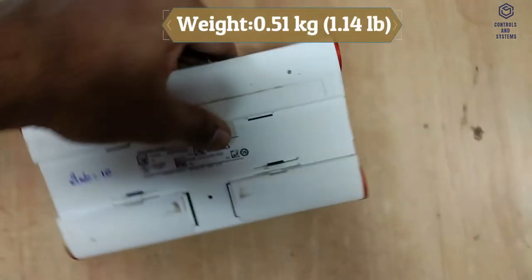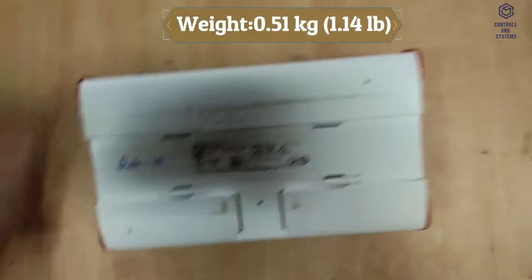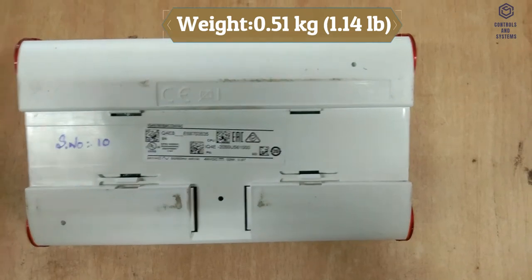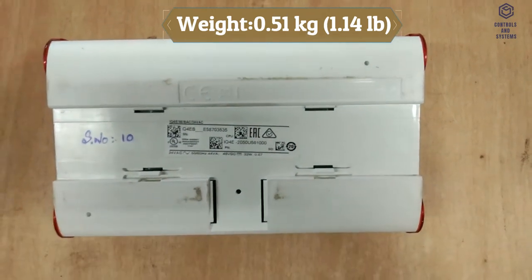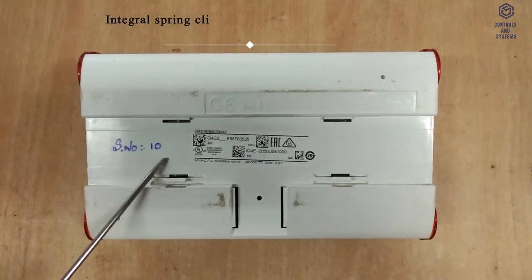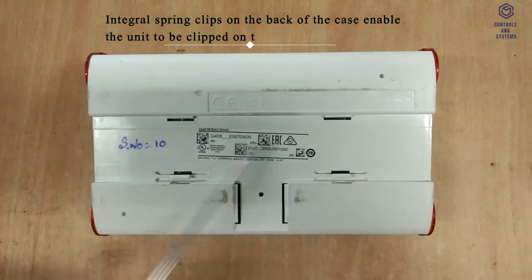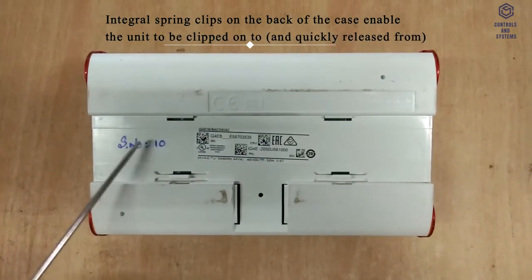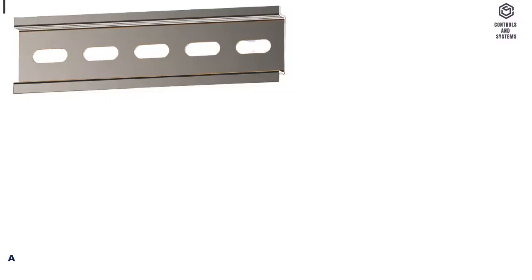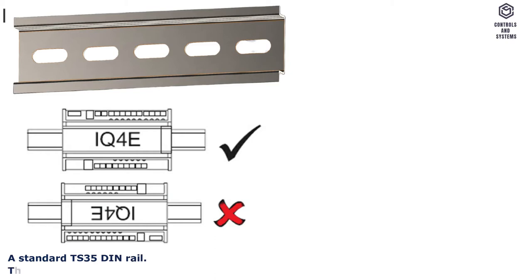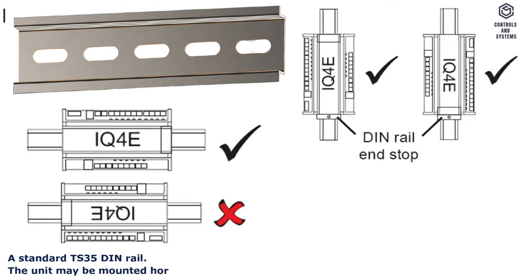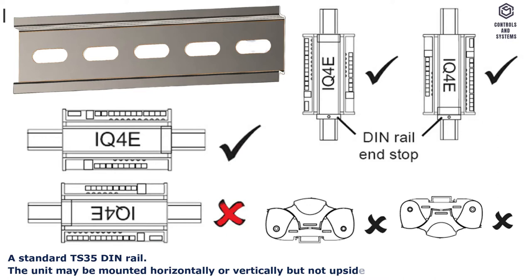Weight: 0.51 kg (1.14 lb). Integral spring clips on the back of the case enable the unit to be clipped onto, and quickly released from, a standard TS-35 DIN rail. The unit may be mounted horizontally or vertically but not upside down or on its back.